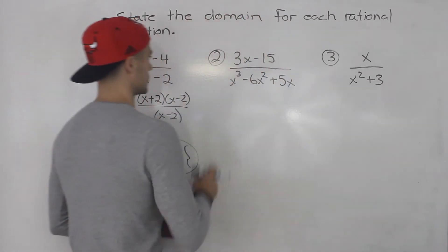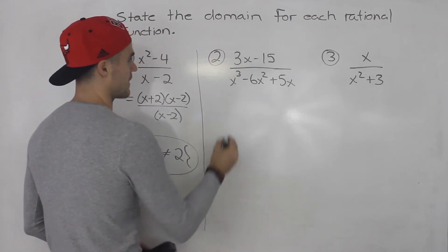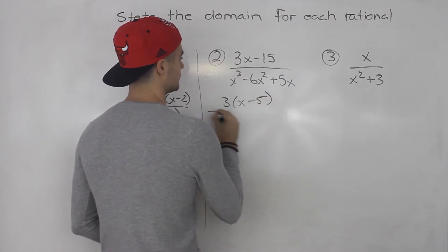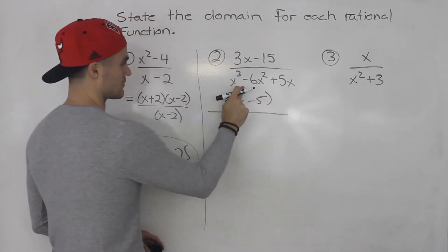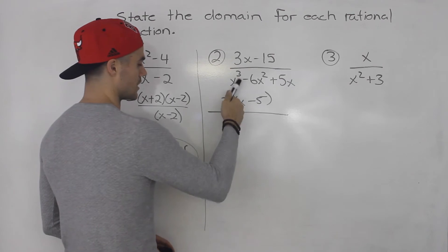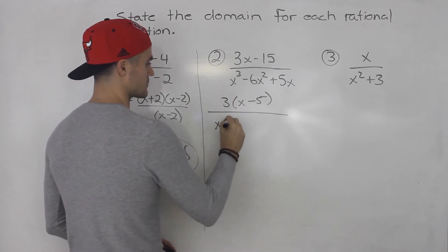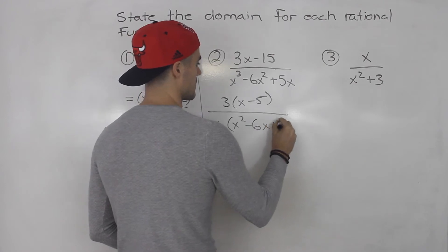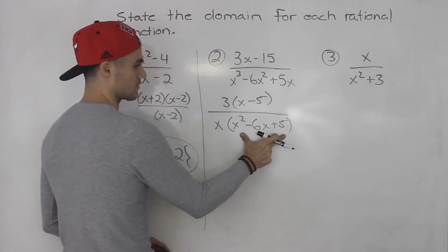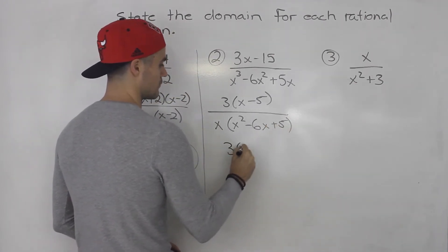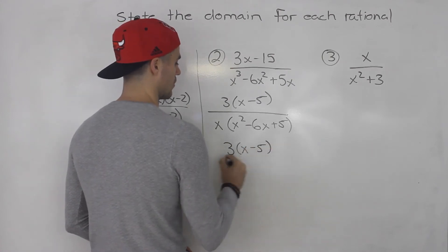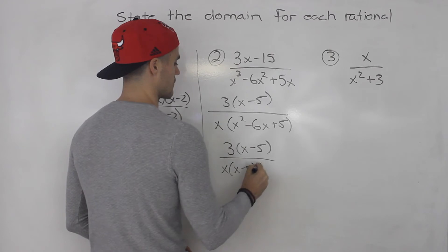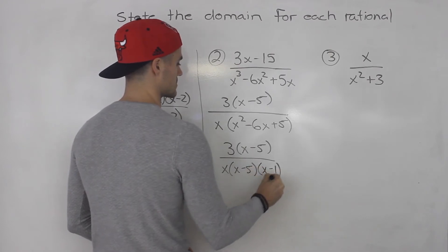Moving on to number 2. Let's factor here. So we could take out a 3, left with (x-5). And then from the denominator, we could take out an x. We'd be left with x²-6x+5. And then we could factor the denominator even further. We'd be left with x(x-5)(x-1).